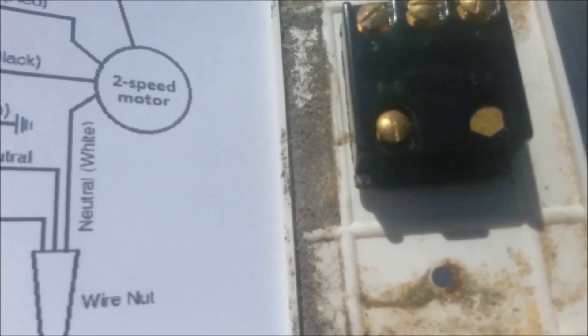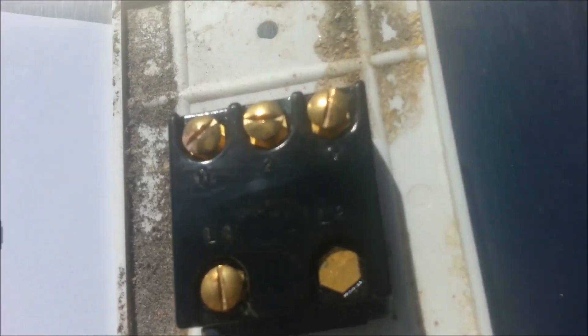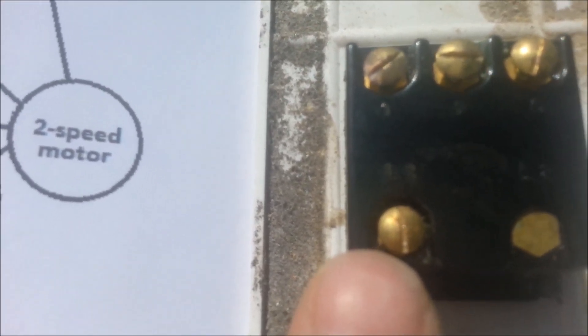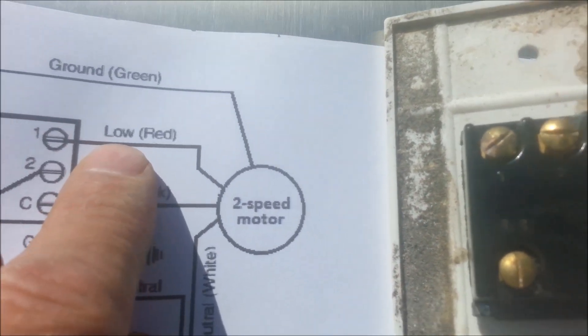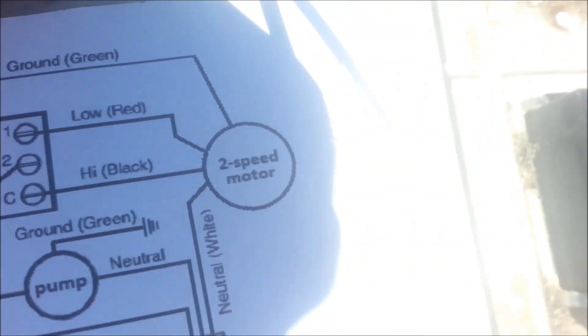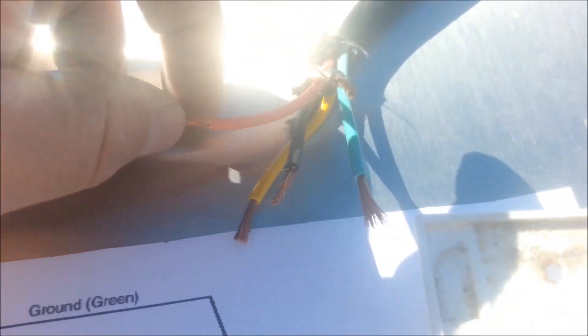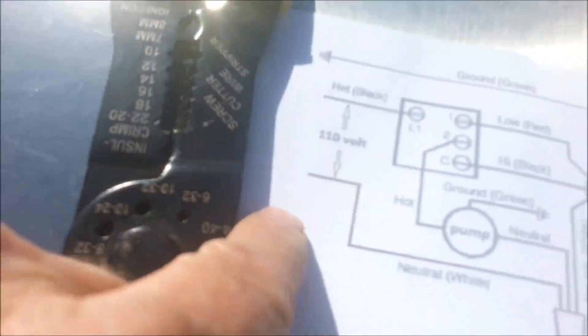So make sure you follow your own schematics, it's only for this. So right here is L1, that's going to be where the hot's coming in. So then we got low, red. So red is going to be for low speed on the motor. Black for high speed. Ground is just going to go straight to ground. And white is going to go straight to the white coming in off the wall, right here.